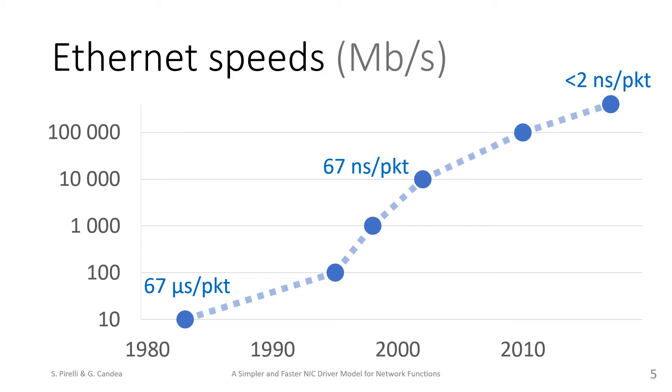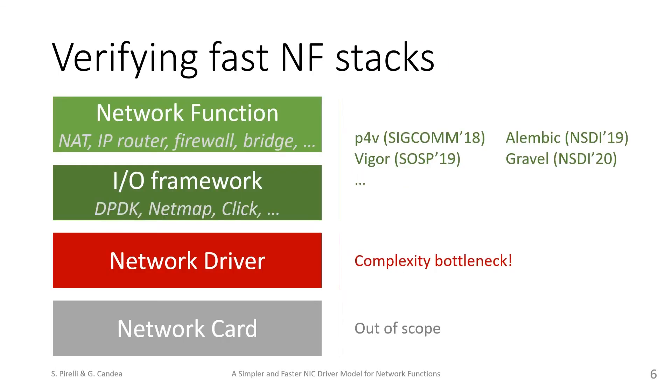We want to formally verify that the resulting software network functions meet their specifications. There has been a lot of recent work on verifying fast network stacks. Systems such as Vigor and Gravel can verify that network functions follow a specification, such as an RFC, including part of the I/O framework they use, such as DPDK or CLICK.